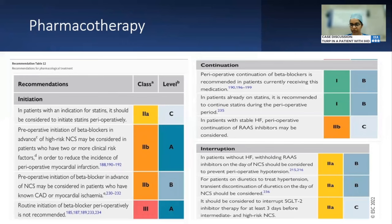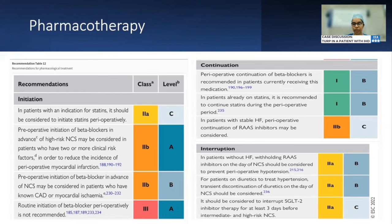Certain drugs must be continued throughout the perioperative period — Class 1 recommendation: beta blockers and statins. If the patient is already on these, they must be continued perioperatively. In stable patients with stable heart failure, perioperative continuation of renin-angiotensin-aldosterone inhibitors may be considered. ACE inhibitors and ARBs should be held prior to the procedure. Diuretics used to treat hypertension may be discontinued on the day of surgery. SGLT2 inhibitors such as empagliflozin and dapagliflozin must be stopped three days prior due to risk of euglycemic ketoacidosis. Routine initiation of beta blockers perioperatively is not recommended.